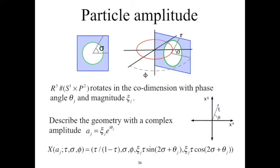The geometry of R³ # S¹ × P² rotates in the codimension with phase angle θj and magnitude ξj. We can describe that geometry with a two-dimensional vector or with a single complex number, aj = ξj e^(iθj). We see that geometry described with the mapping, where the magnitude by which it extends into dimensions x4 and x5 is scaled by ξj, and the map is rotated by angle θj. In the diagram in the lower right, we see an abstraction which we will use to keep track of the complex amplitude of a knot.